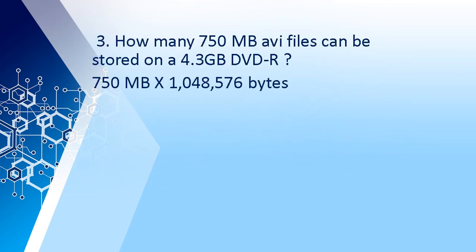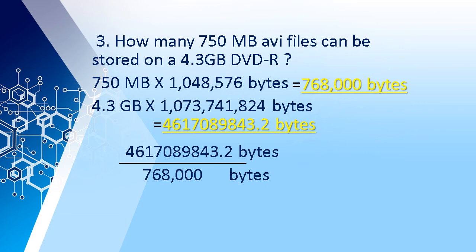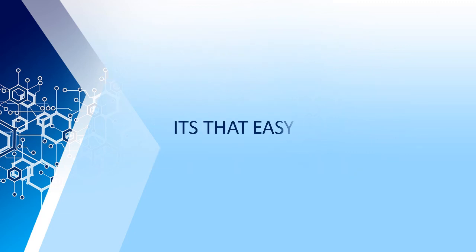750 megabytes times 1,048,576 bytes is equal to 786,432,000 bytes. 4.3 gigabytes times 1,073,741,824 bytes is equal to 4,617,089,843.2 bytes. 4,617,089,843.2 bytes divided by 786,432,000 bytes is equal to approximately 6 AVI files.